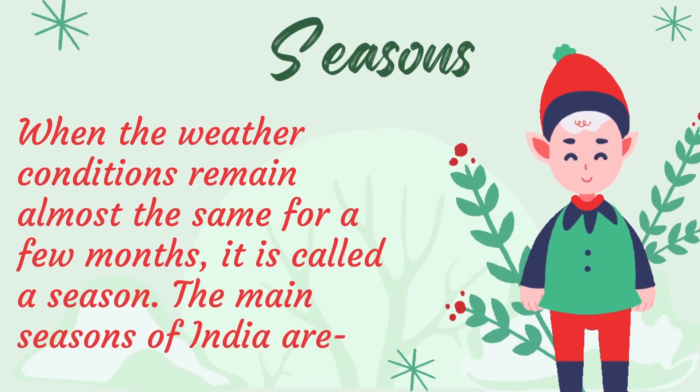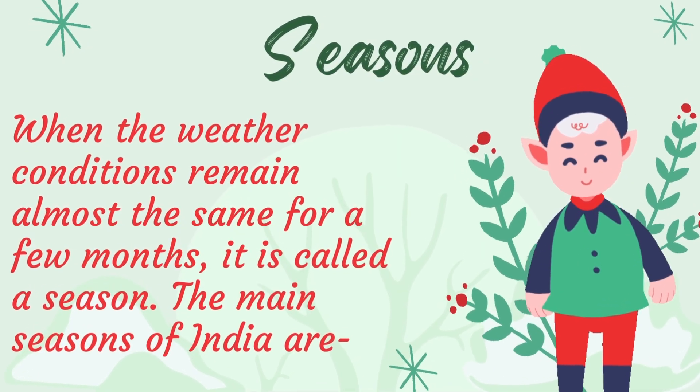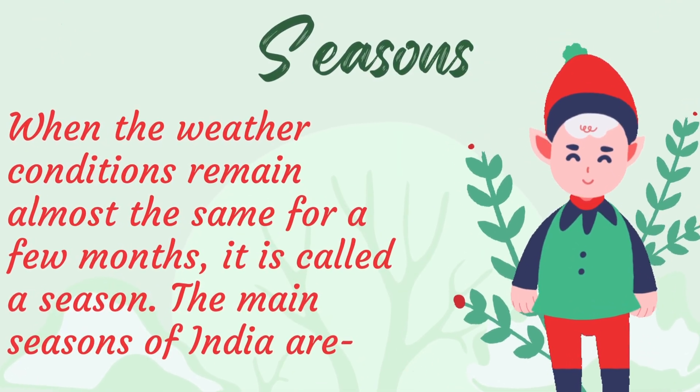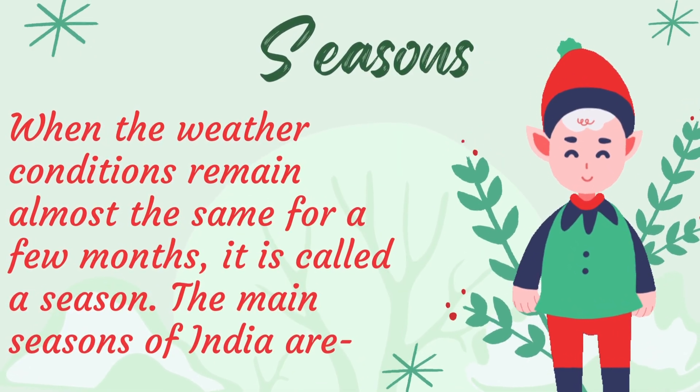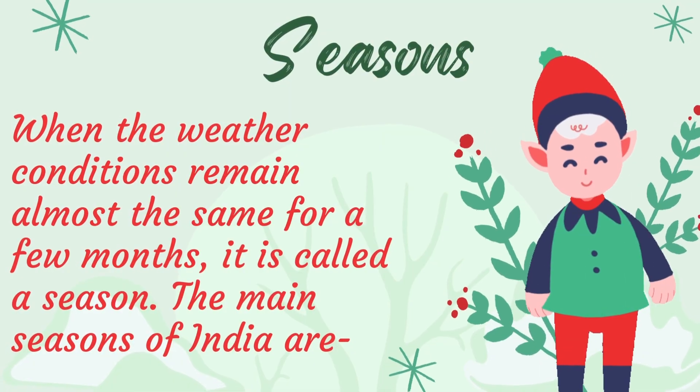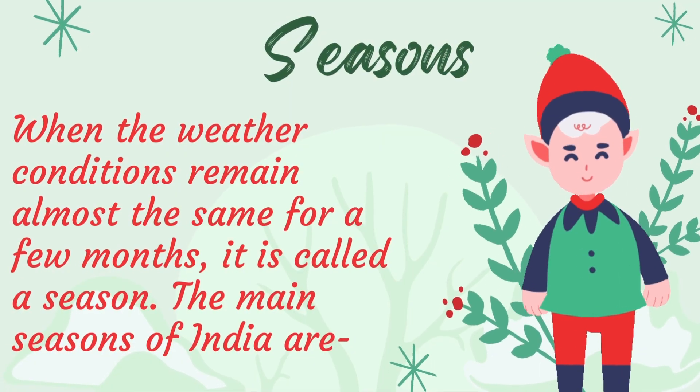When the weather conditions remain almost the same for a few months, it is called a season. The main seasons of India are: Summer, Monsoon, Winter, Autumn, and Spring.